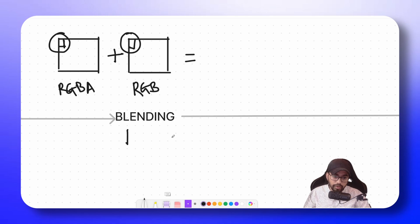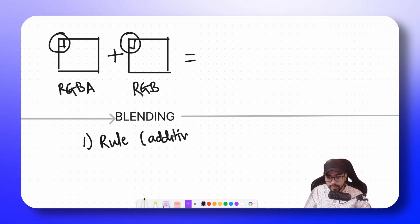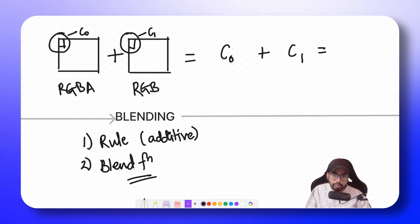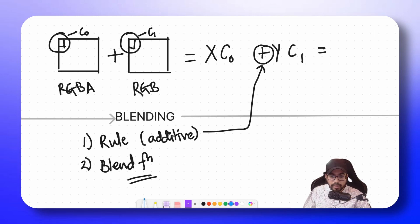Let's say our blending rule is additive, which is a plus operation. The first thing we decided is the rule — in this case additive. The second thing we need to decide is the blend function. Let's say this is C0 (Color 0) and this is C1. With additive blending, this is C0 plus C1, but they won't be directly added — there would be some multiplier. Let's name the multipliers X and Y. When we decide the blending rule we decide the operation, and when we decide the blend function we decide what these constants X and Y are going to be.